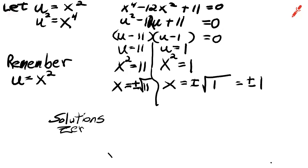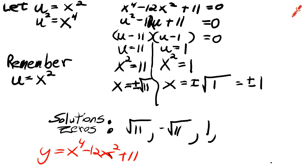And they would have been zeros if we had had y equals x to the 4th minus 12x squared plus 11. And here are four solutions.